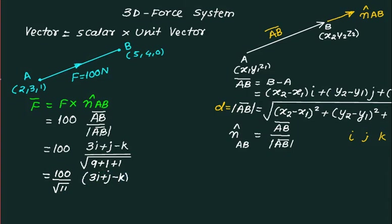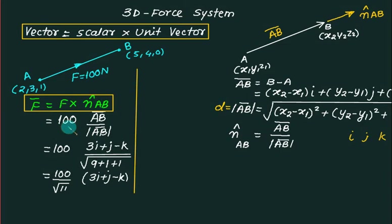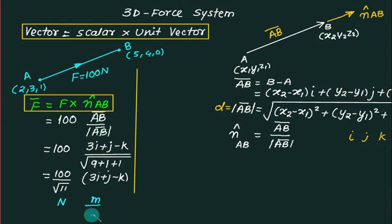This is the first way to write down a force vector given coordinates. The unit of 100 is Newtons, and the coordinates are in meters, so the meters cancel out, leaving the force unit as Newtons. The distance between A and B is root 11, found by the same formula: square root of (5−2)² + (4−3)² + (0−1)² = root 11.